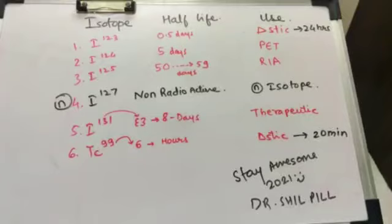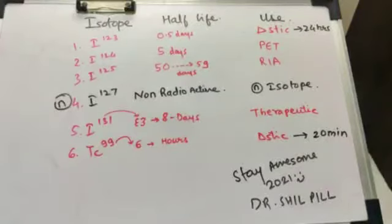To remember the half-life of iodine-131, the number 3 mirror image can be merged with it and it becomes 8. So the half-life of iodine-131 is 8 days.